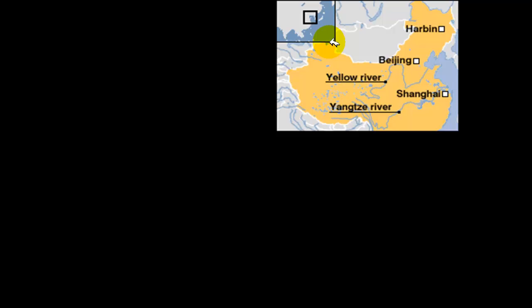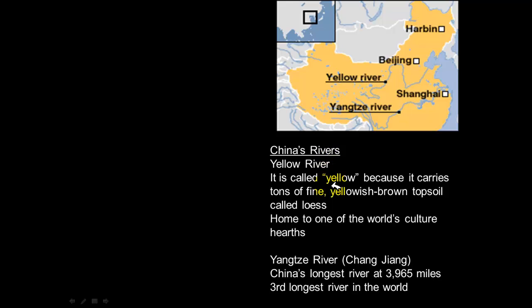Now let's talk about the two major rivers in East Asia: the Yellow River and the Yangtze River, both in China. The Yellow River gets its name because it carries enormous amounts of fine yellowish-brown topsoil called loess. Similar to the Nile River, when the Yellow River overflows it replenishes the surrounding soil, which is why it is home to one of the world's culture hearths. The Yangtze River is China's longest river at just under 4,000 miles and is the third longest river in the world.